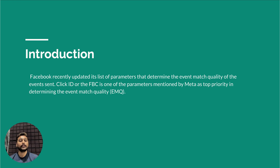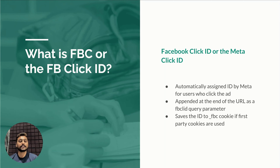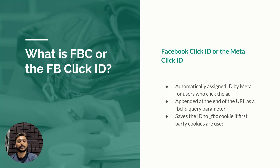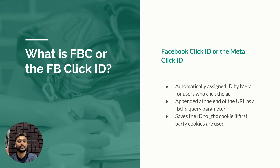The FBC, or Facebook click ID, is one thing that will help you improve your event match quality. So what is this FBC? The Facebook click ID is an identifier assigned automatically by Meta for users who click an ad. It is appended to the end of the URL as a query parameter. If you've implemented Meta Pixel using first-party cookies on your website, this FB click ID is saved in the FBC cookie.